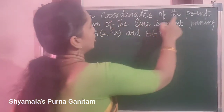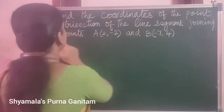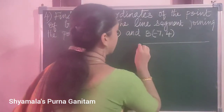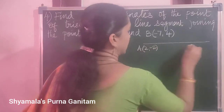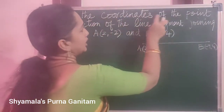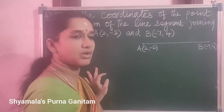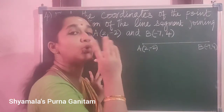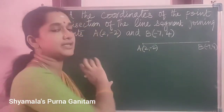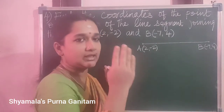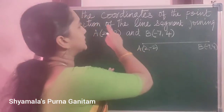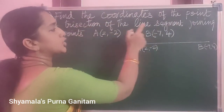Fourth sum: find the coordinates of the point of trisection of the line segment joining the points A(2, -2) and B(-7, 4). So take A and B coordinates as 2 comma -2 and -7 comma 4. Trisection means dividing into 3 equal parts — the ratio will be 1:1:1. You are asked to find the two trisection coordinate points.